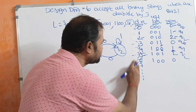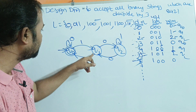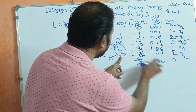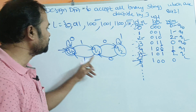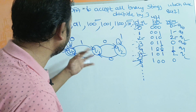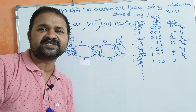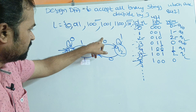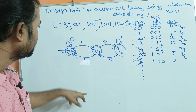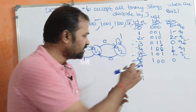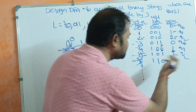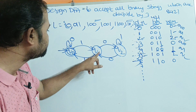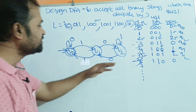For decimal 6, binary 110: Q0 on 1 goes to Q1; Q1 on 1 moves to Q0; Q0 on 0 stays at Q0 — which is the final state, confirming 6 is accepted. Now let us verify our diagram: on Q0 we have applied both 0 and 1; on Q1 we have applied both 1 and 0; on Q2 we have applied both 1 and 0. So our diagram is complete and correct — each state uses all symbols 0 and 1.